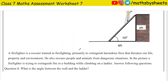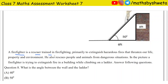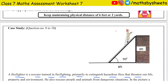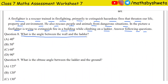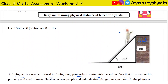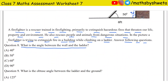Questions 8 to 10 are case study questions. A firefighter is a rescuer trained in firefighting to extinguish hazardous fires that threaten life, property, and environment. In a picture, a firefighter is climbing a ladder to extinguish fire in a building. Question 8: What is the angle between the wall and the ladder? If the wall is straight, it is 90 degrees. With 90 plus 50 equaling 140 degrees, the third angle is 180 minus 140, which is 40 degrees. The angle between the wall and the ladder is 40 degrees.